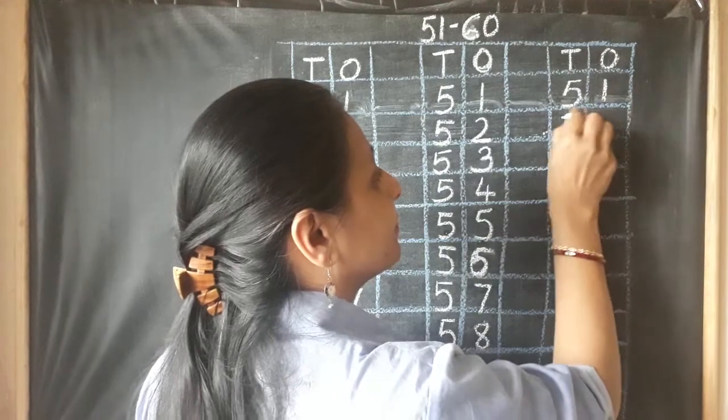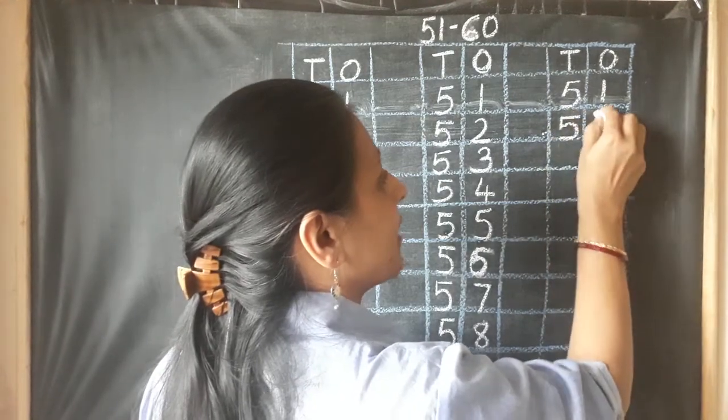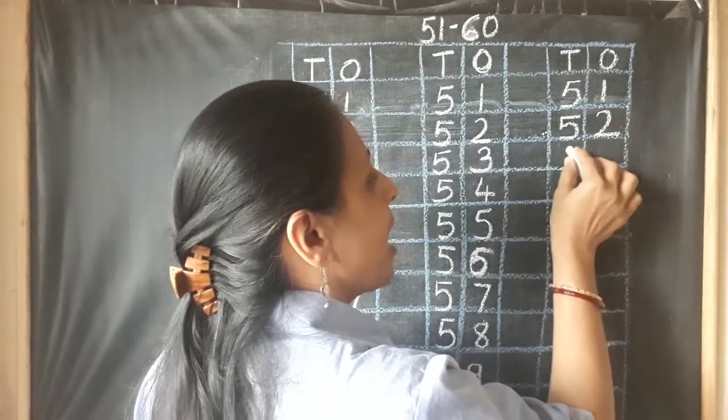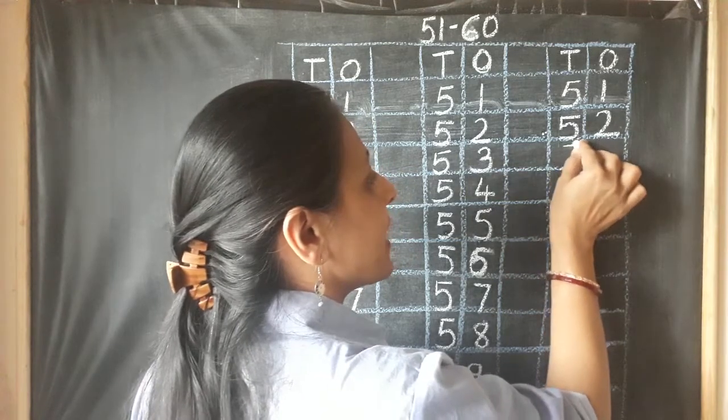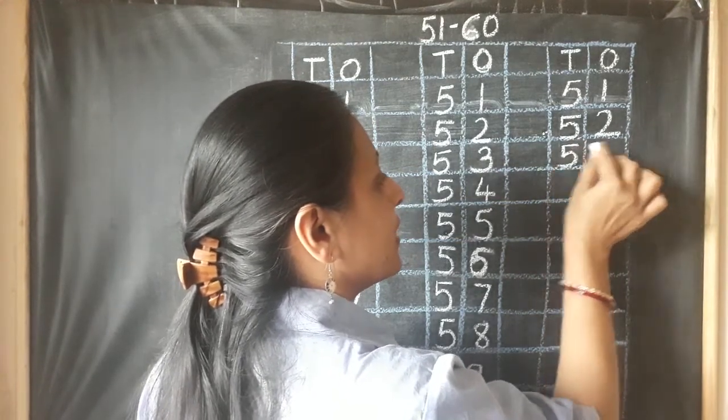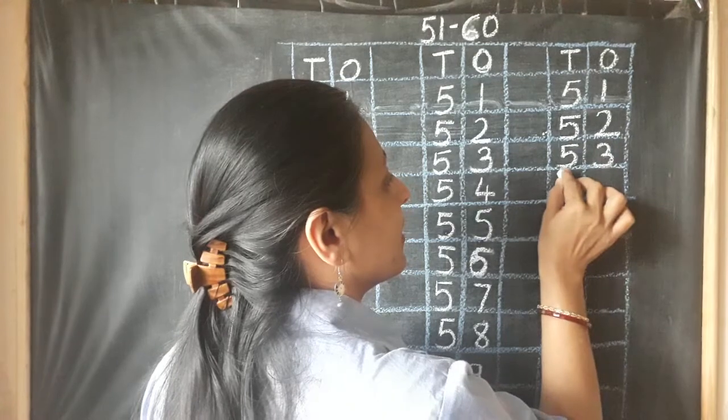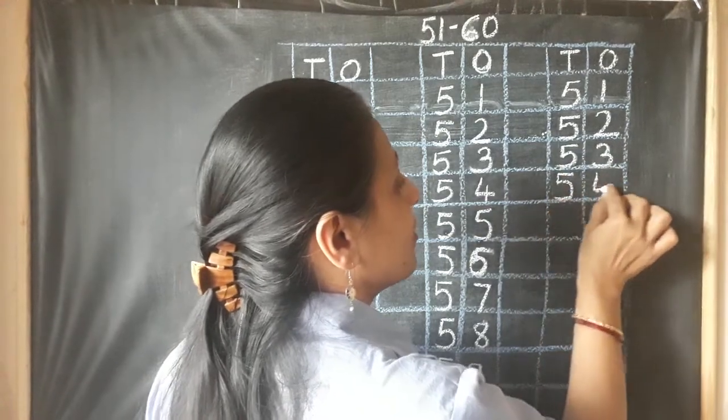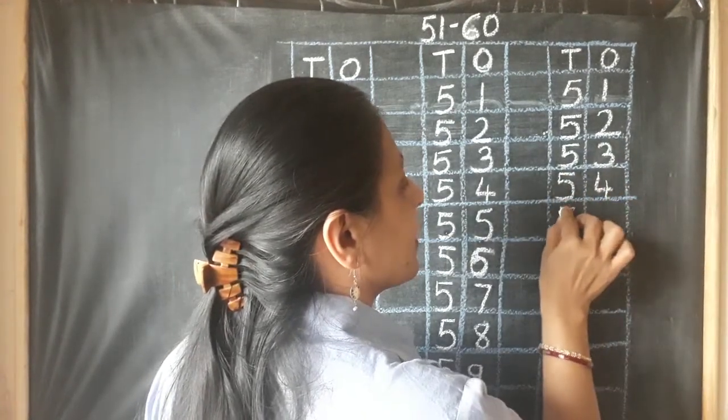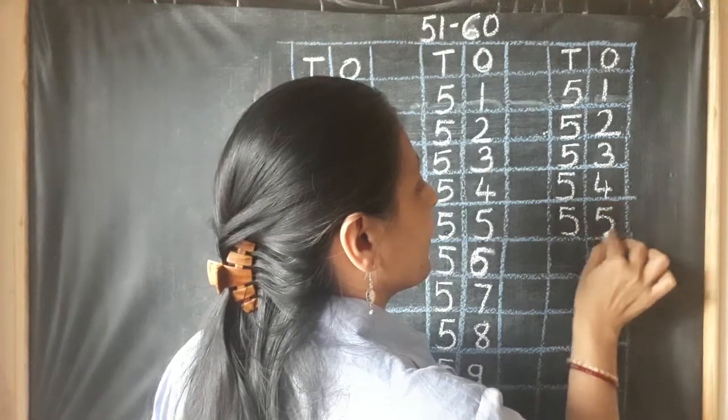Third demonstration: 5, 1, 51. 5, 2, 52. Are you saying loudly? Say louder. 5, 3, 53. 5, 4, 54. 5, 5, 55.